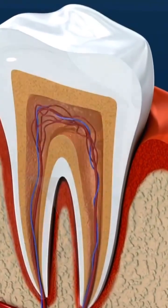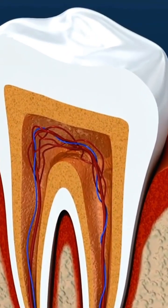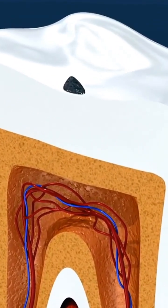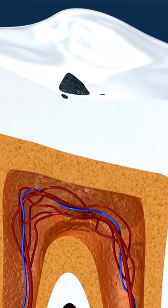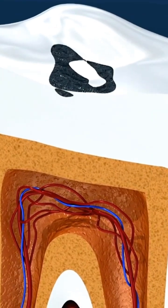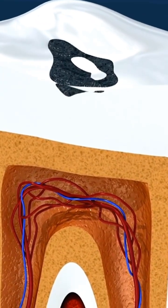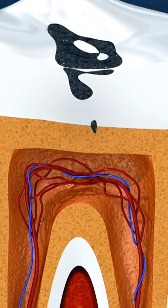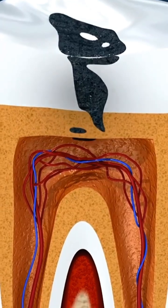Did you know that a root canal system infection can occur without any signs or symptoms? A root canal is made up of blood vessels, nerves, and connective tissue that can become inflamed or infected.